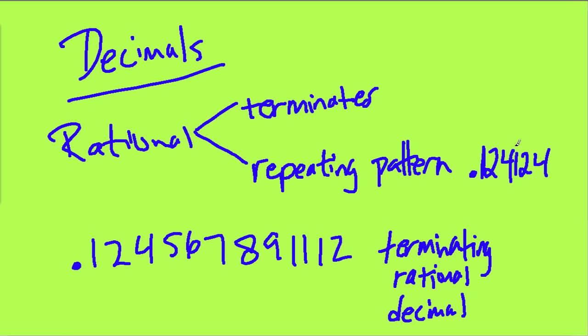This chunk of numbers is repeating. Put a line or a vinculum above the pattern that's repeating. As soon as you have a repeating pattern, even though this never ends, it's a rational decimal.